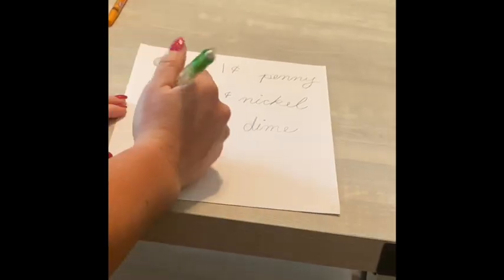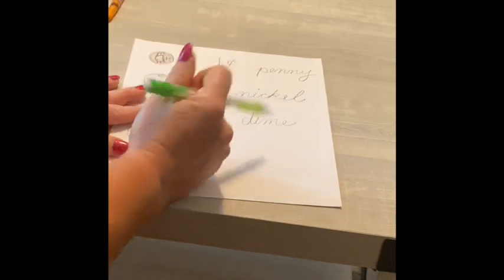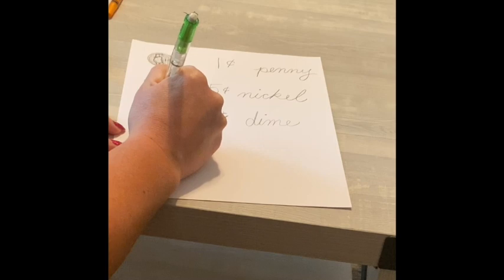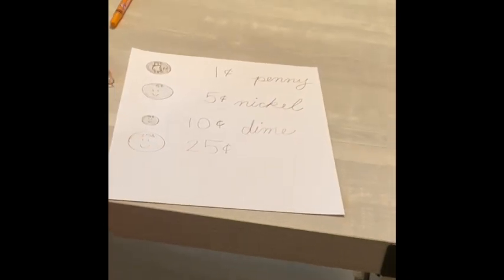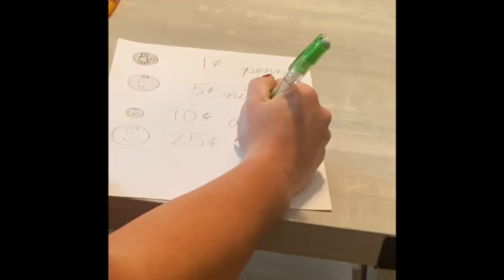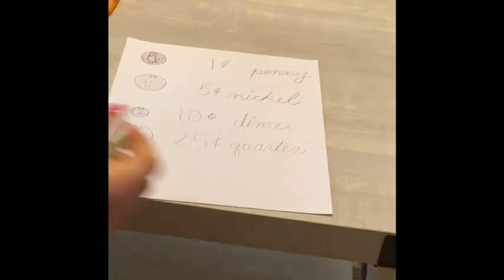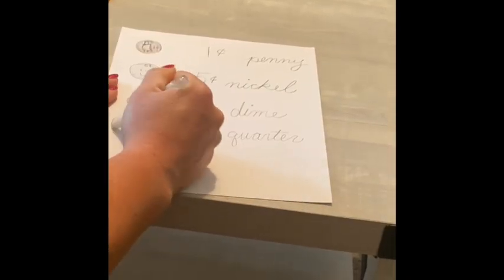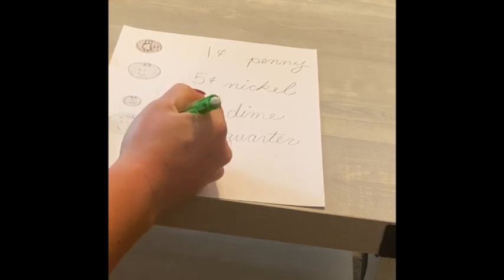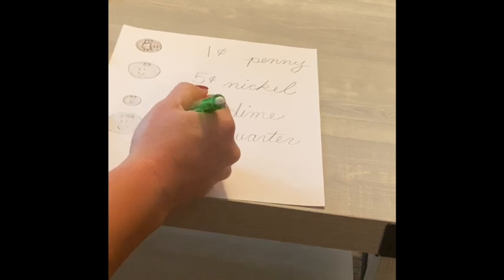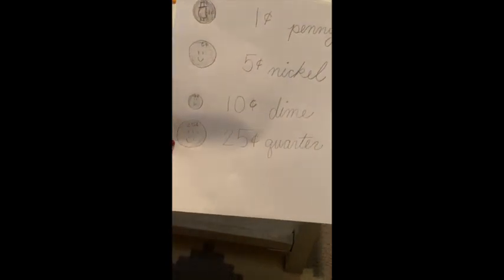Okay. Our next coin is a quarter. A quarter is the biggest one. So, I'm going to draw the biggest circle right here. It's actually a little bigger than a nickel. So, this is a quarter. A quarter is worth 25 cents. And a quarter, even though it sounds like it starts with a c-c-c, it's actually a q-u. Q-u-a-r-t-e-r. Quarter. And a quarter is also silver. Once again, I'll give you guys a chance to copy that down.